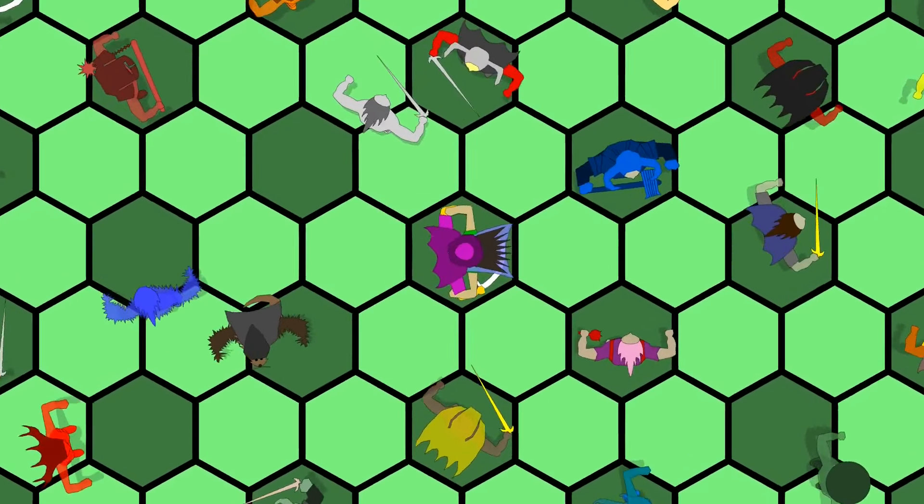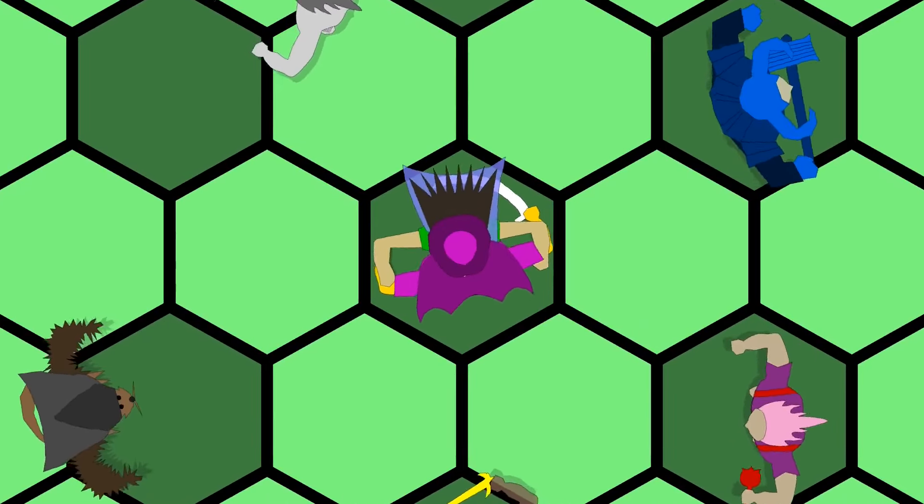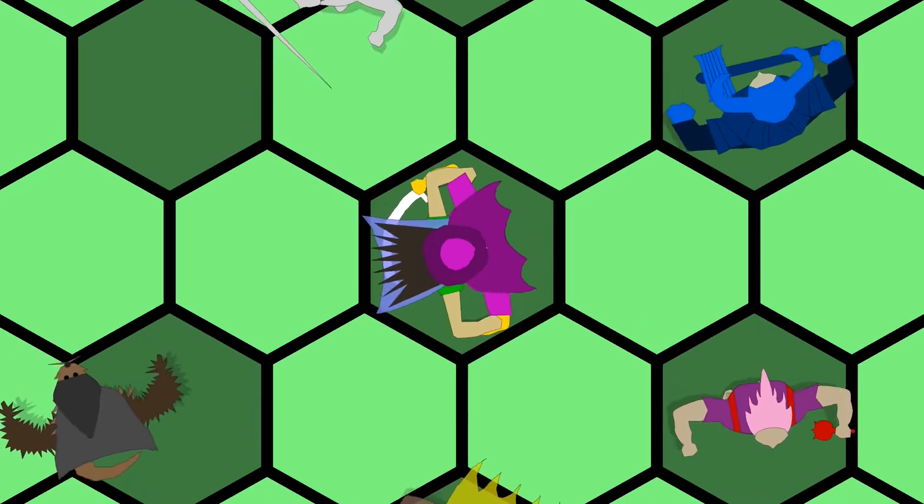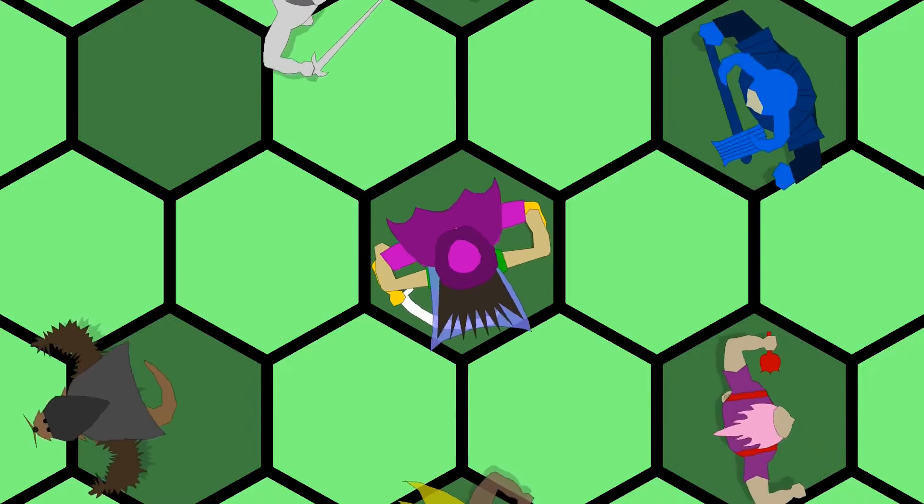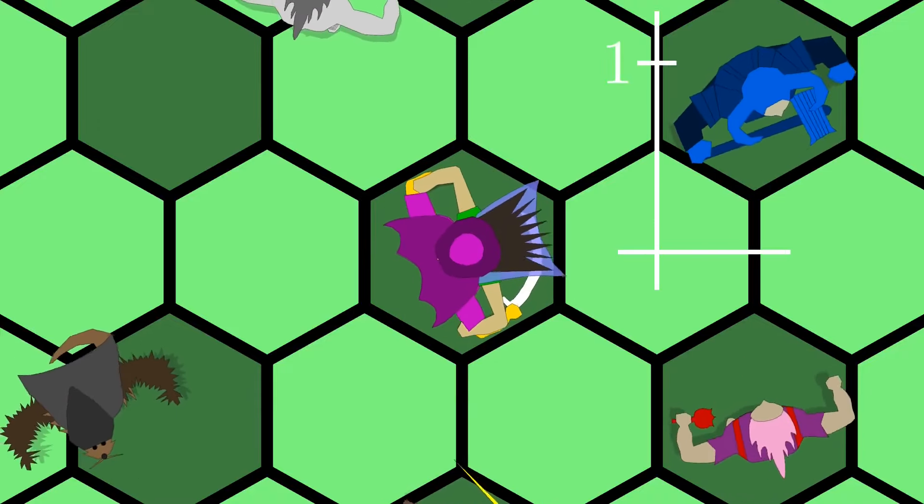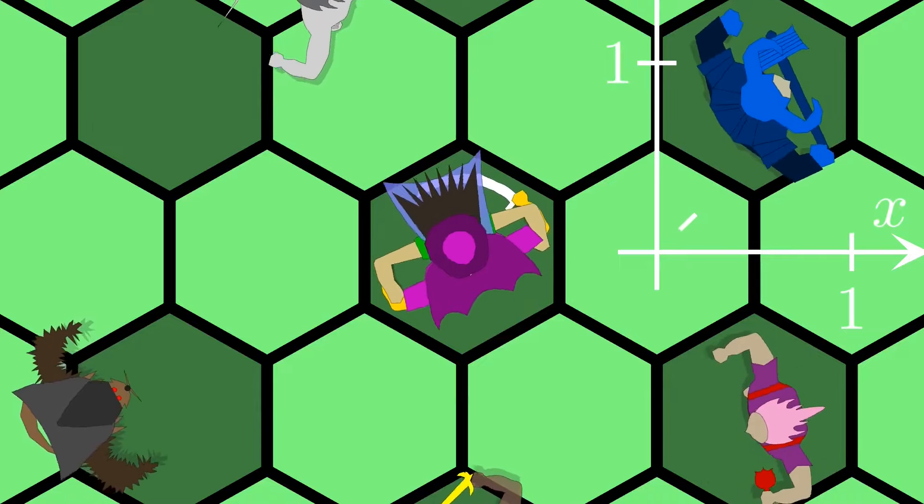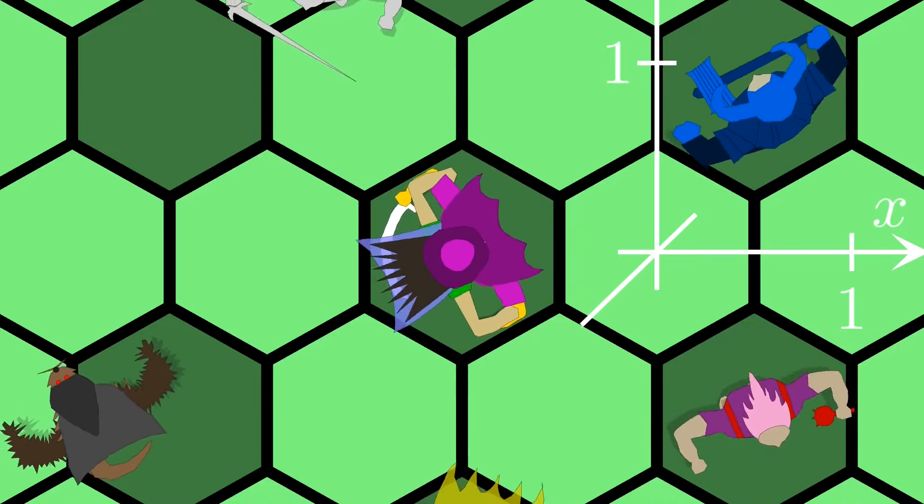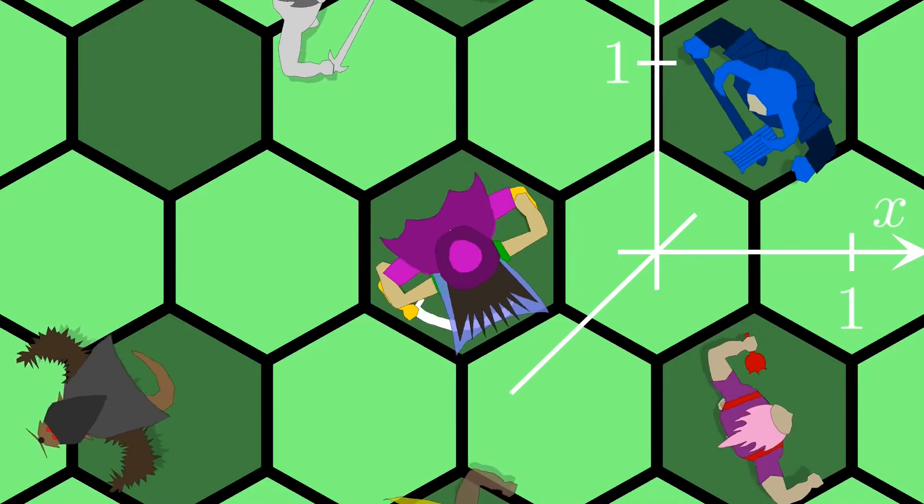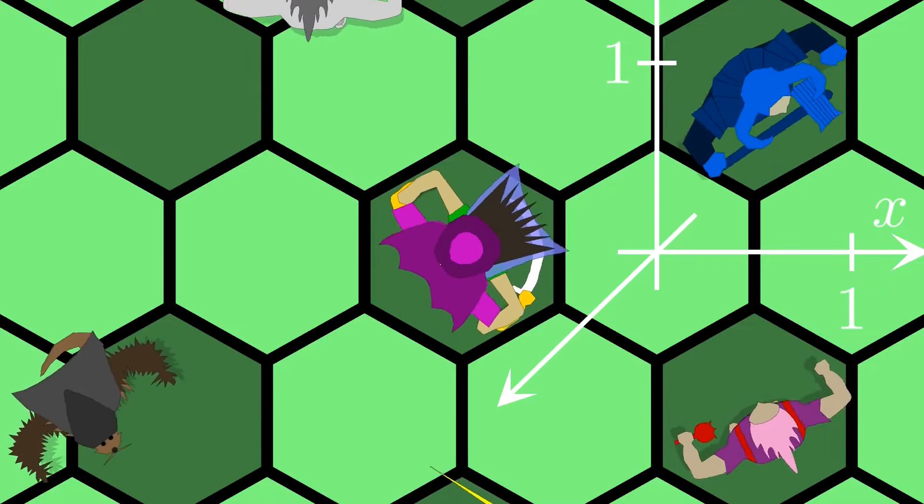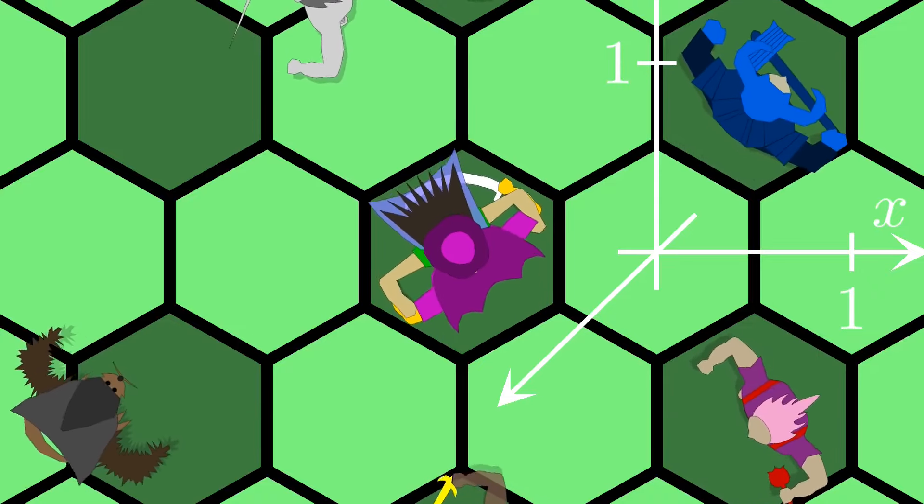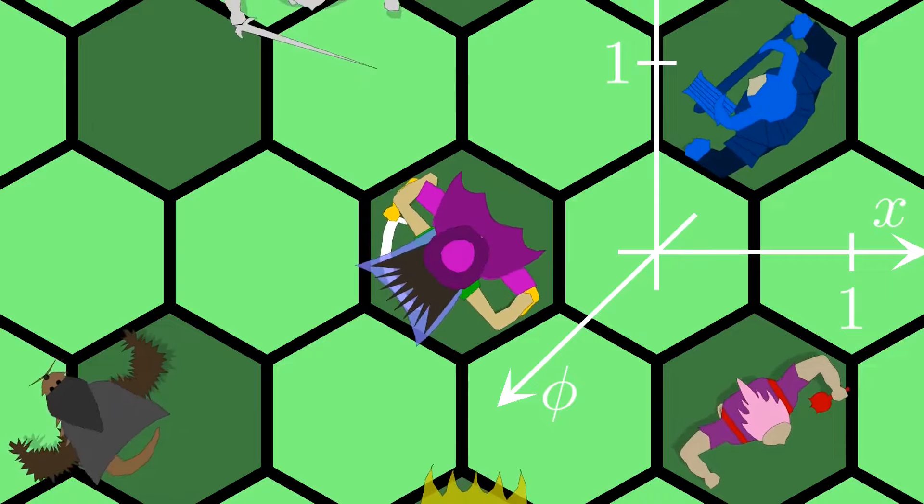For example, the princess and the vizier are standing in the same place, but looking in the opposite directions. This means we need three dimensions to describe a person: two dimensions of the Euclidean plane and the third one about the angle at which they are turned. We will call this third dimension phi.